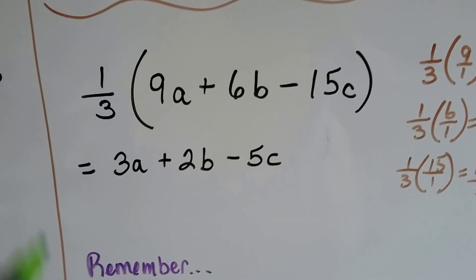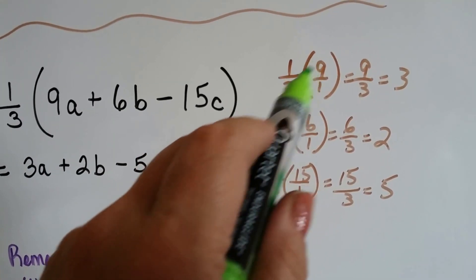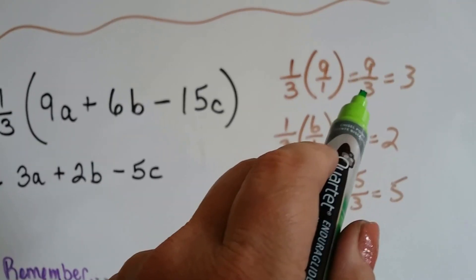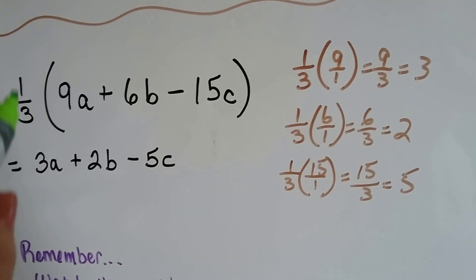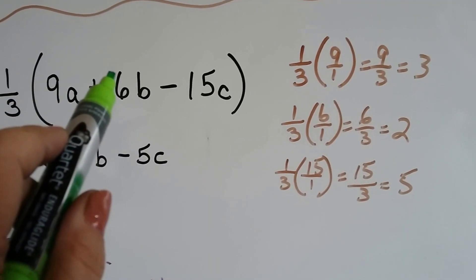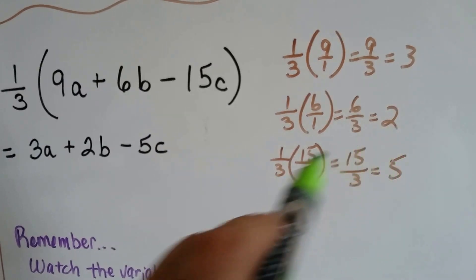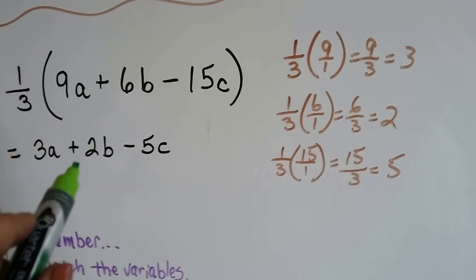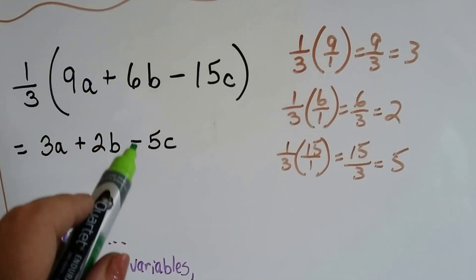We can even do it with fractions. This would be 1/3 times 9A. 1/3 times 9 is 1/3 times 9 over 1 which is 9 thirds which is 3. So we've got 3A. And then 1/3 times 6B is going to be 1/3 times 6 over 1 which is 6 thirds which is 2. So we've got 2B and we put our addition sign there.